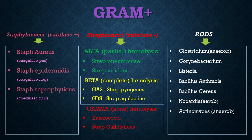Before we move on to the second generation of cephalosporins, let's take a quick second to remind ourselves which organisms are gram-positive and gram-negative, because we'll be using them a lot during this video. The gram-positives are the staphylococci — Staph aureus, Staph epidermidis, and Staph saprophyticus. We have streptococci: the alpha-hemolytic ones are Strep pneumo and Strep viridans; the beta-hemolytic ones are Strep pyogenes and Strep agalactiae; and the gamma-hemolytic ones are the enterococci and Strep gallolyticus, previously known as Strep bovis. The gram-positive rods are Clostridium, Corynebacterium, Listeria, Bacillus anthracis, Bacillus cereus, Nocardia, and Actinomyces.